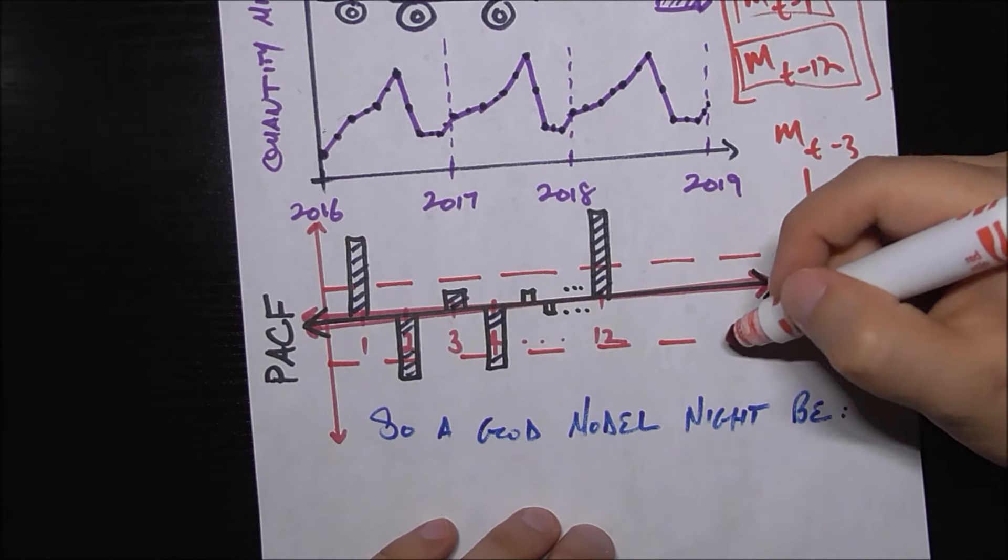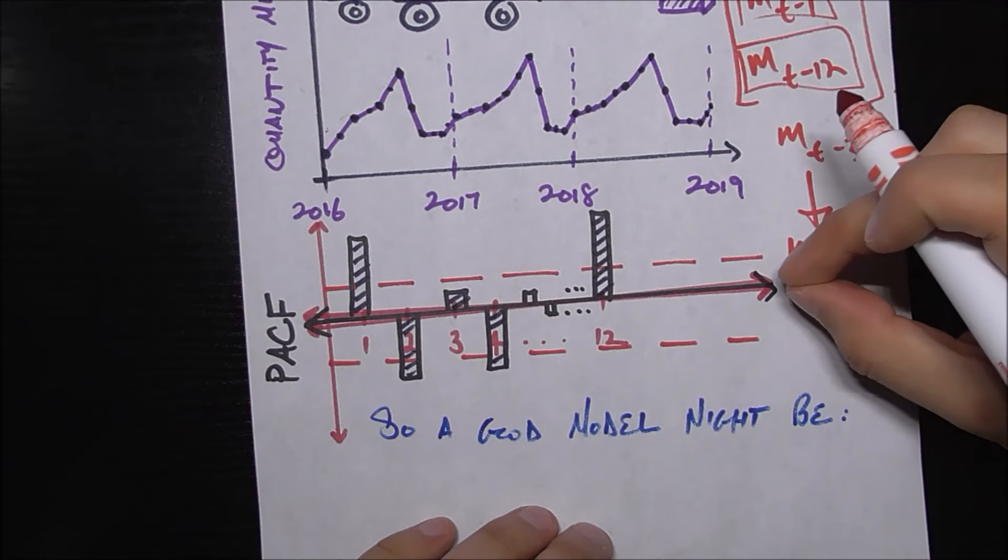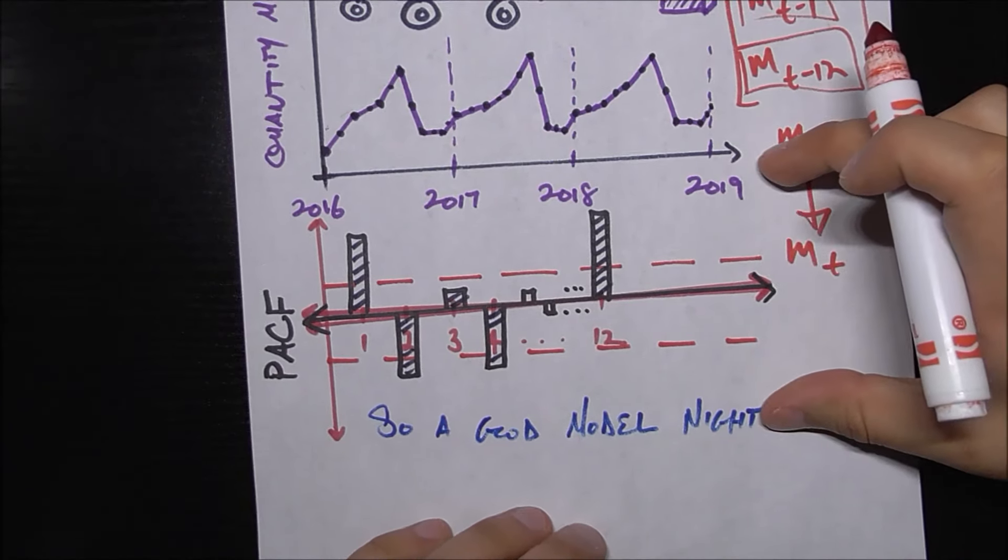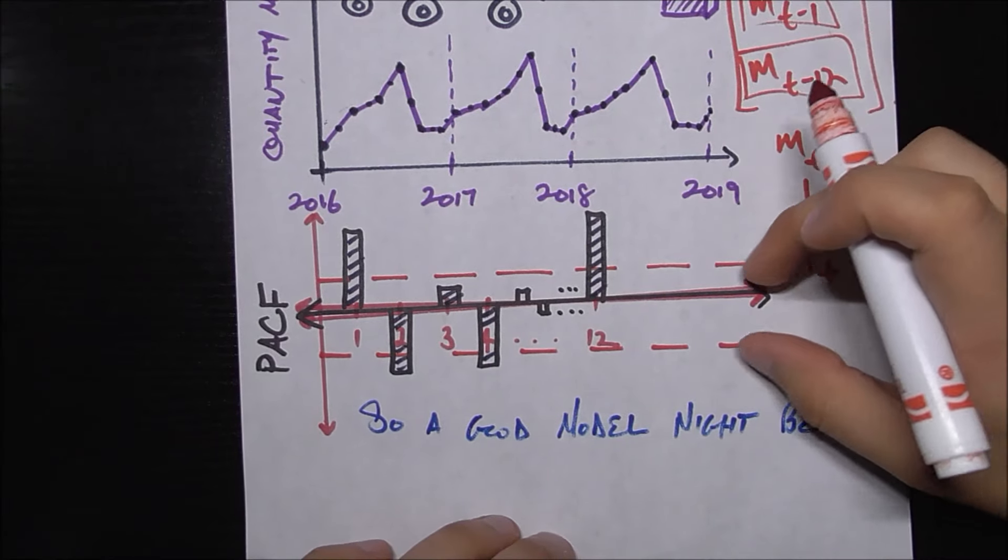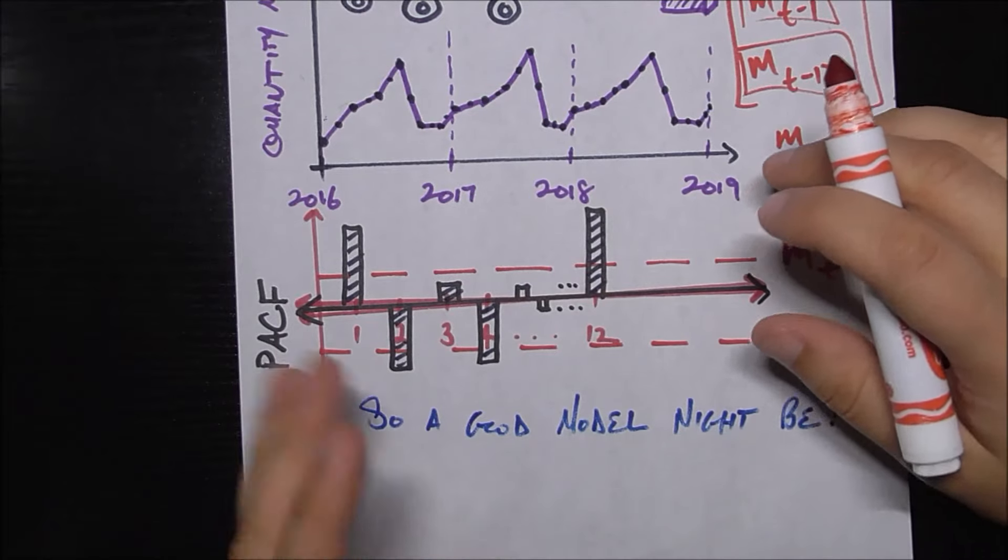So we only want to include the lags whose PACF are above these red bands. And these red bands basically you can think of them as anything within the red bands we think is statistically close to zero. Anything outside the red bands are statistically different than zero, so we have evidence to say that anything outside the red bands is actually different from zero.